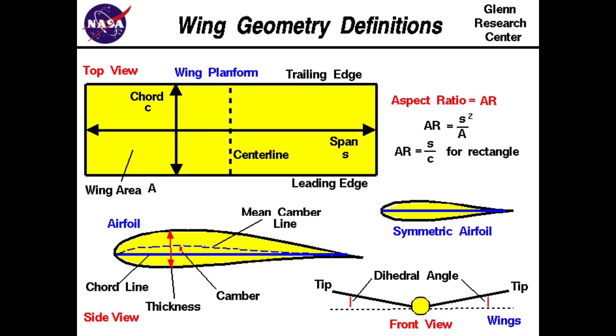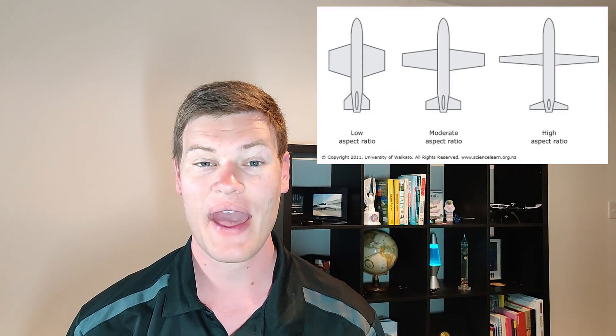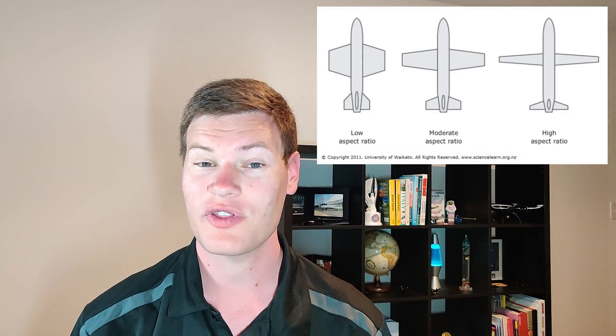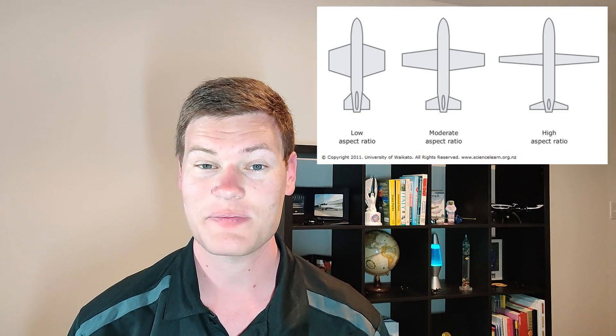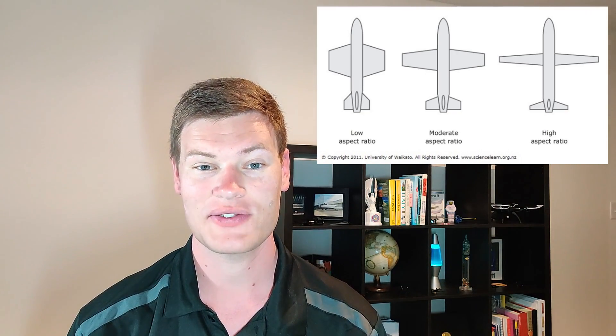That brings us to our first definition: aspect ratio. In aeronautics, the aspect ratio is the ratio of the wingspan to the mean cord length. Therefore, a long narrow wing has a high aspect ratio, and an airplane with a smaller aspect ratio has shorter and wider wings.